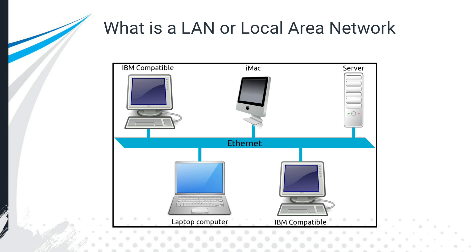At a high level, you're going to hear something called the LAN — your local area network. Your local area network is a network of computers, and the brain of the network is usually a router. The router comes to you from your internet service provider — that might be AT&T, Verizon, or Comcast. There are lots of internet service providers out there that give you a router.